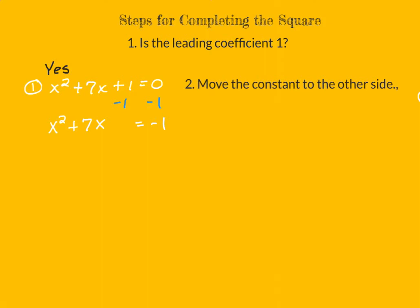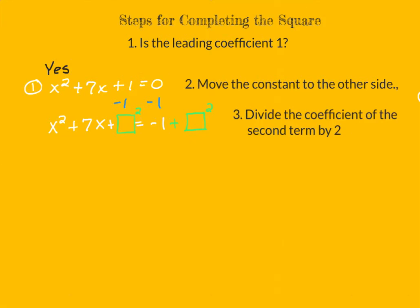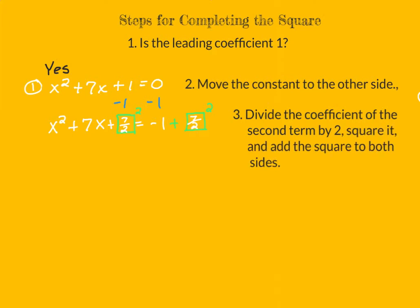Now this is completing the square, so I'm going to draw in a square here — it's going to be some term that's squared. But I have to follow the golden rule of algebra: do unto one side as you do unto the other. If I add a squared term to the left side, I have to add it to the right side as well. What goes into that square? I divide the coefficient of the second term — the x term — by 2. That's 7 divided by 2, and that value goes into both boxes, because that is what I'm going to square and add to both sides.